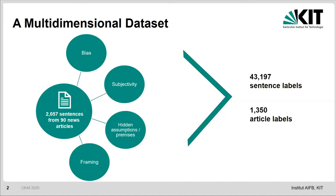Here is a preview of our dataset which we created. It consists of 90 news articles and over 2,000 sentences, annotated manually by crowdsourcing workers with respect to an overall bias as well as different bias dimensions such as subjectivity, hidden assumptions, and framing. Overall, this resulted in over 40,000 sentence labels and about 1,300 article labels.